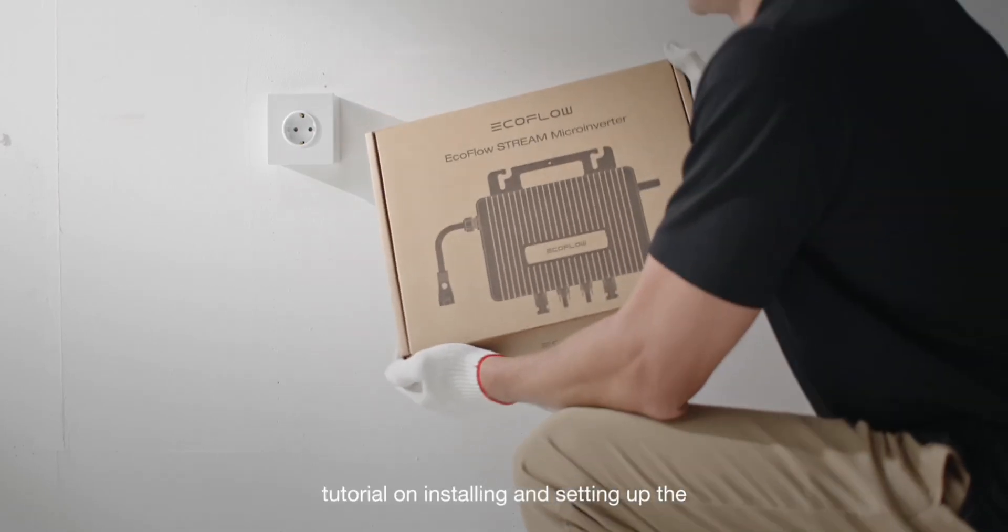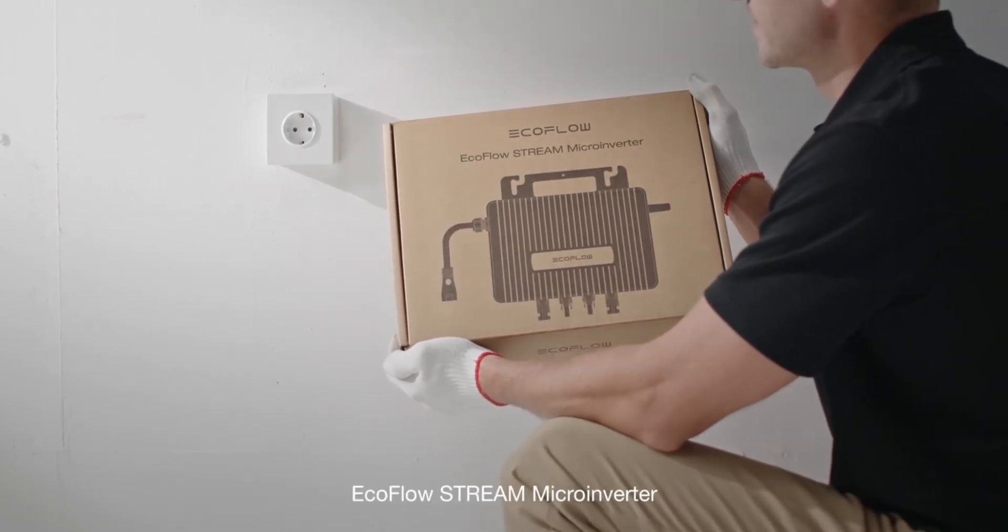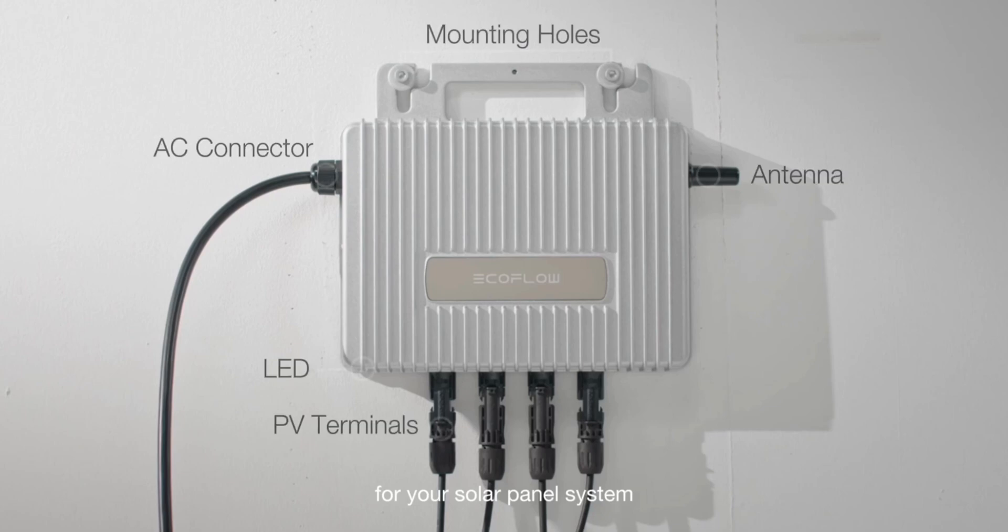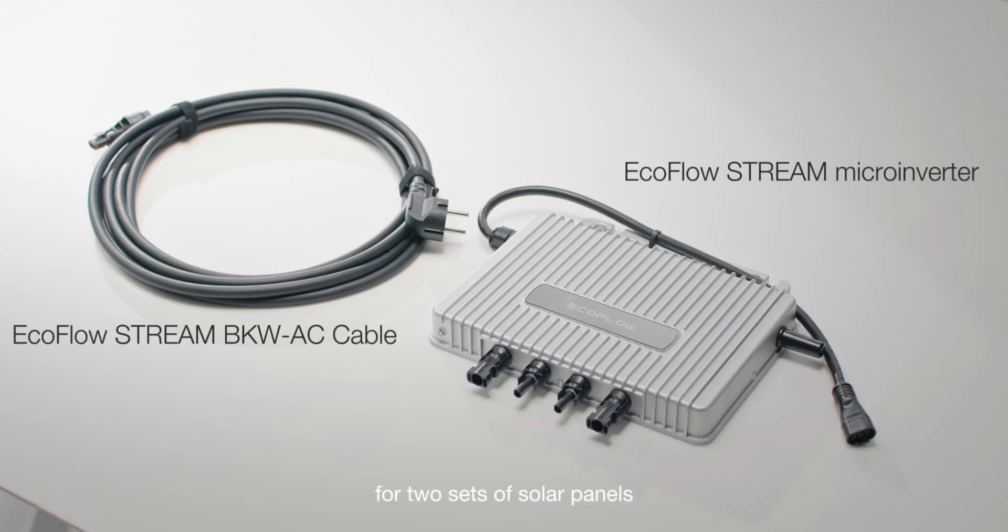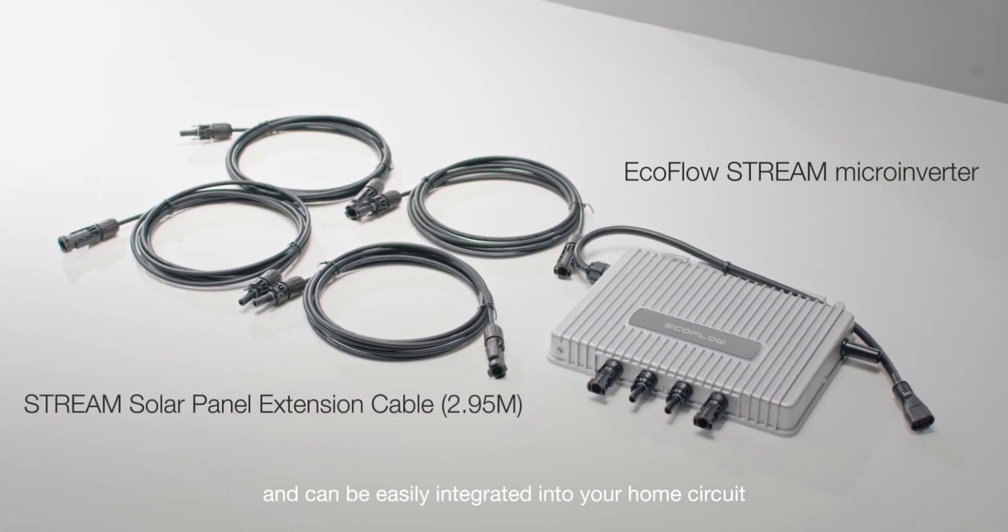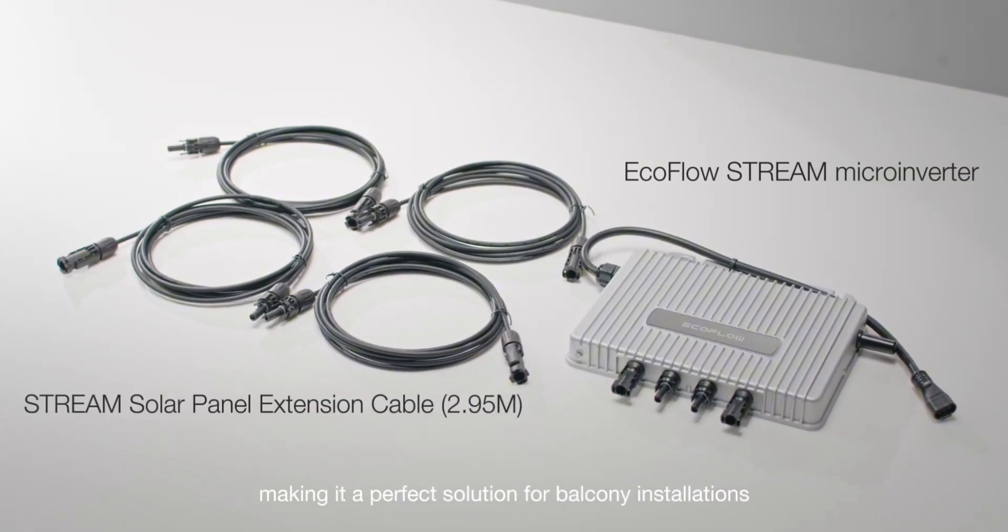Welcome to this tutorial on installing and setting up the EcoFlow Stream microinverter for your solar panel system. The EcoFlow Stream microinverter supports connections for two sets of solar panels and can be easily integrated into your home circuit, making it a perfect solution for balcony installations.